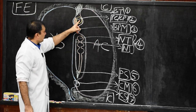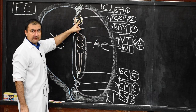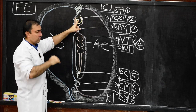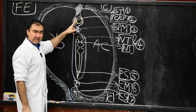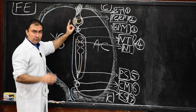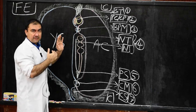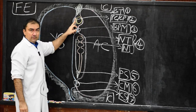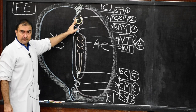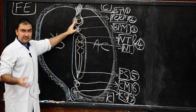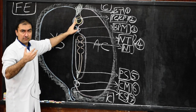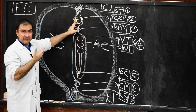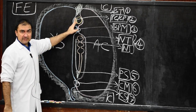Remember: the pericardial cavity is present in the dorsal portion — in the roof portion — and in its floor, which means ventral, is the cardiogenic plate. That is the angioblastic mesenchymal tissue which will form the cardiogenic plate.